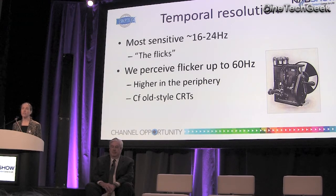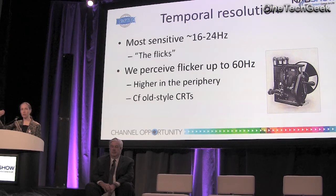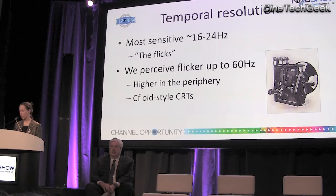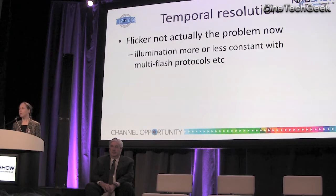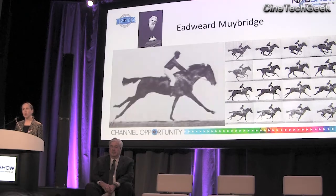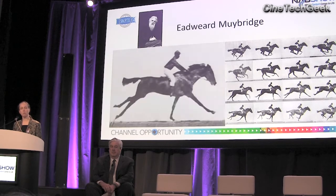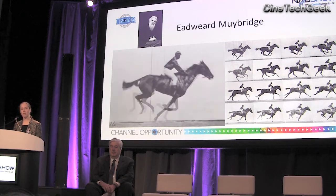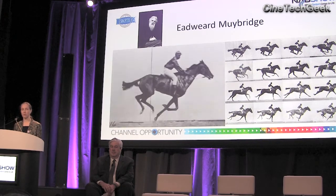We perceive flicker up to 60 Hz — actually higher in the periphery. With old-style CRTs you may have had the experience where it looks fine when you look straight on, but when you turn aside you see an irritating flicker in the corner of your eye. Nowadays, flicker isn't really the problem — we've figured out ways of keeping illumination essentially constant. But temporal undersampling can still lead to artefacts, as in this classic example from Eadweard Muybridge: the image on screen isn't flickering, but it does look jerky — we're seeing motion artefacts due to undersampling.